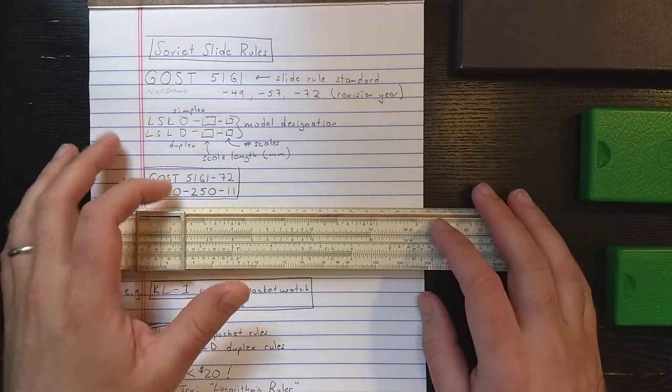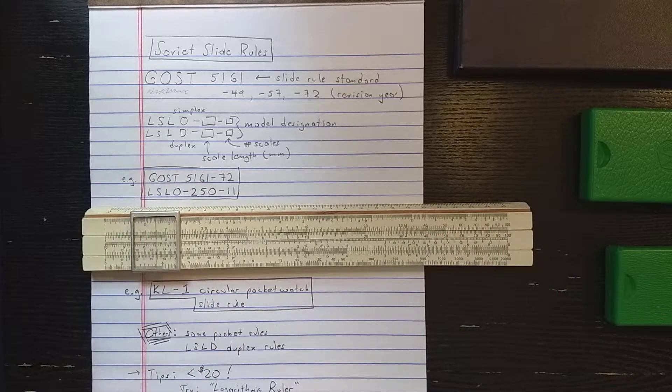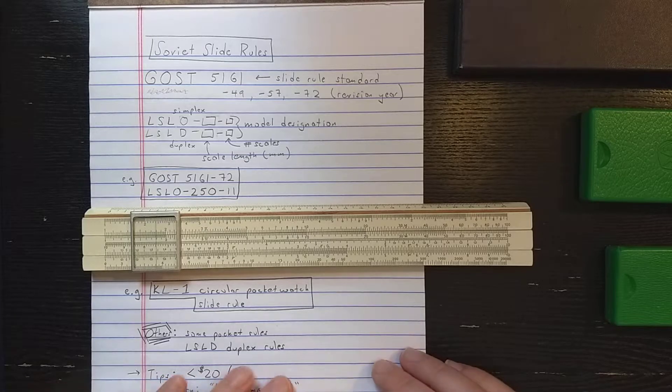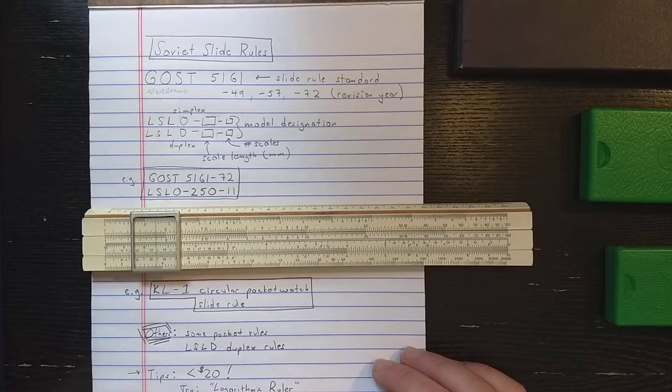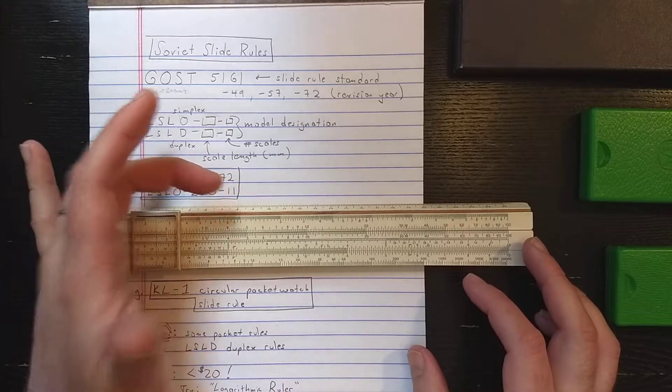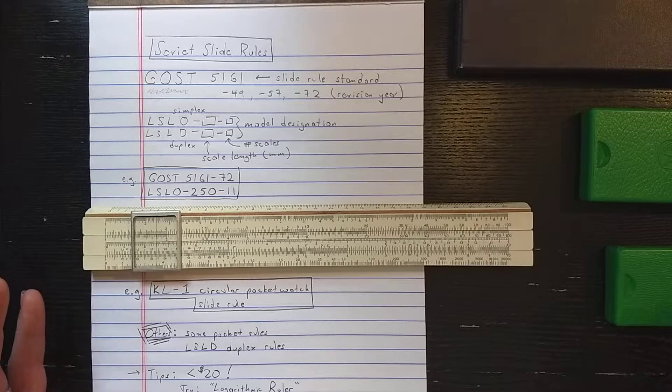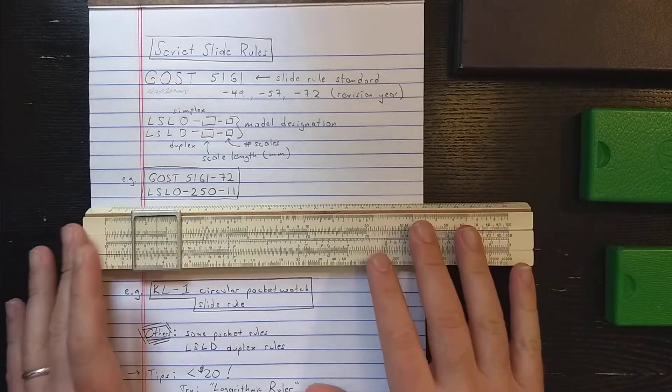The next number, the 250, is the scale length. So 250 millimeters, which is standard slide rule scale length. And 11 for the number of scales. You'll see an LSLO 250-11 made by a bunch of different factories. This is a very common slide rule.